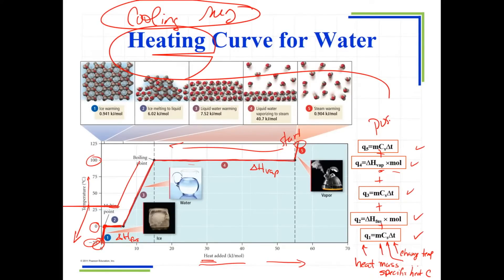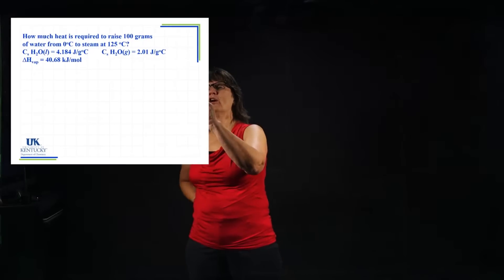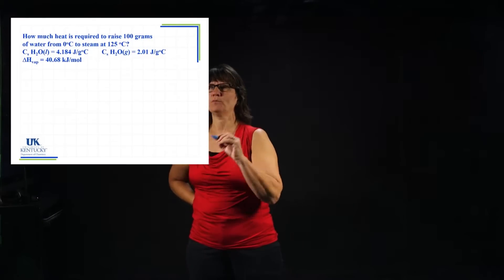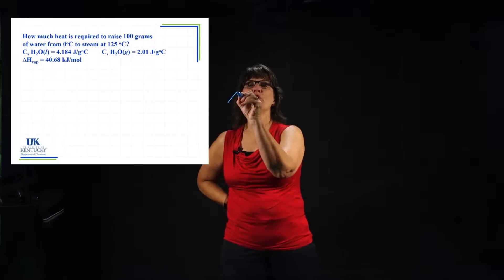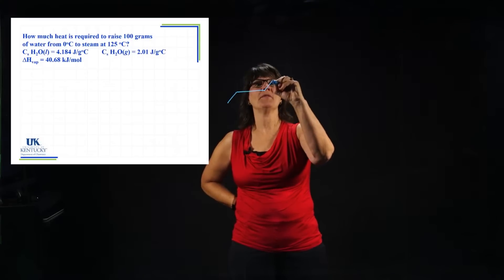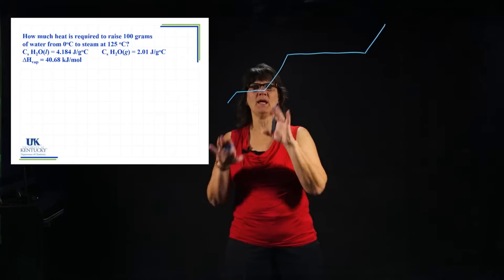We're going to do an example. If you are presented with a problem where you're asked to determine how much heat is required in a situation where you're changing phase and changing temperature, the first thing you want to do is draw the heating curve. You start at the bottom and warm up the solid, then melt it, then warm up the liquid, then boil it, then warm up the gas. That's what you want to draw out first.